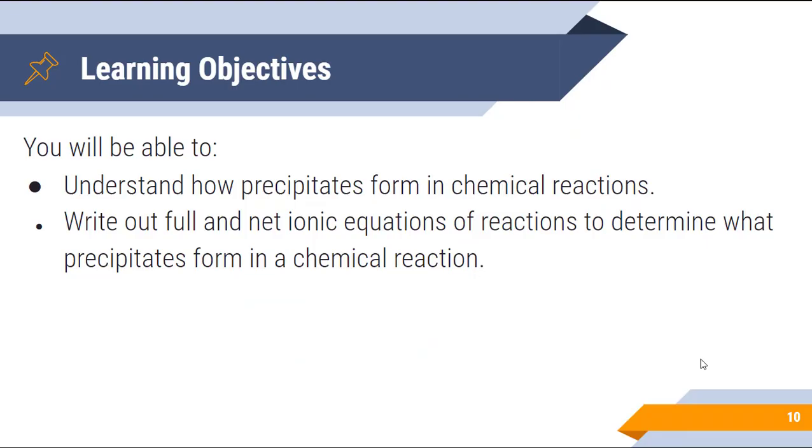All right guys, that's the end of this video. So hopefully by the end of this, and by that I mean right very now, you're able to understand how precipitates form in chemical reactions. And you're also able to write out full and net ionic equations of reactions to determine what precipitates form in a chemical reaction.